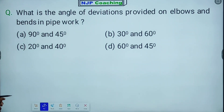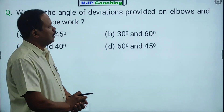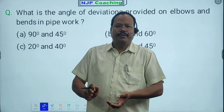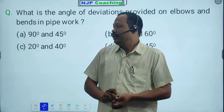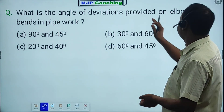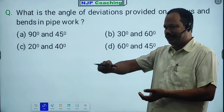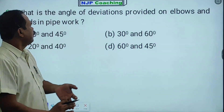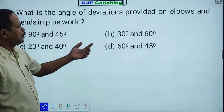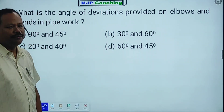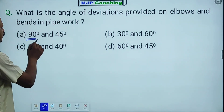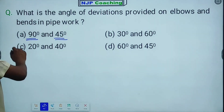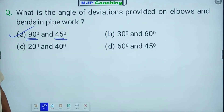Next question: what is the angle of deviation provided on elbows and bends in pipe work? The options include 30, 60, 45, and other angles. The angle of deviation is 90° or 45°. The answer is option A.